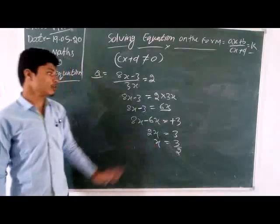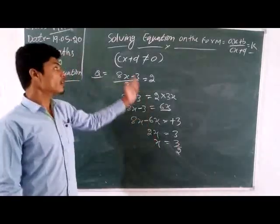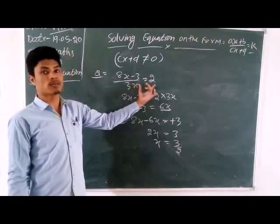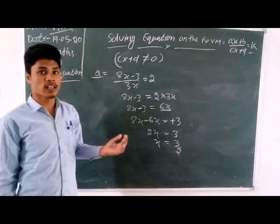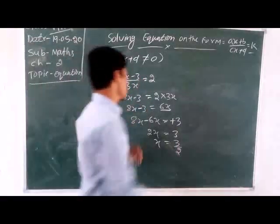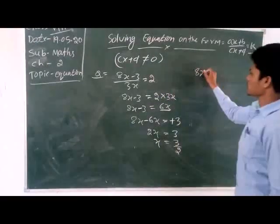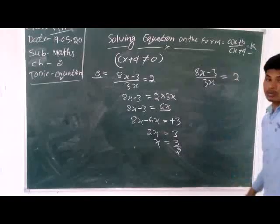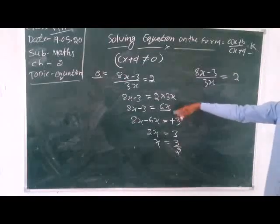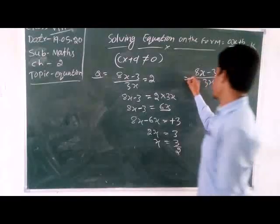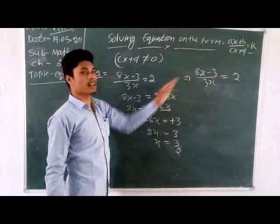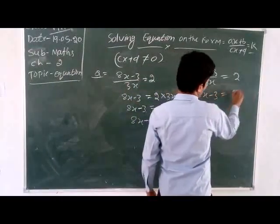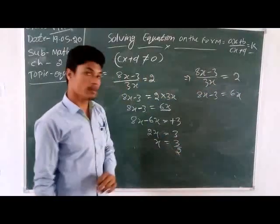So 2x equals 3, and x equals 3 by 2. The value of x is 3/2. Now we check whether our answer is correct. When we substitute the value back into the original equation and both sides are equal, we know our answer is correct. Let us verify.